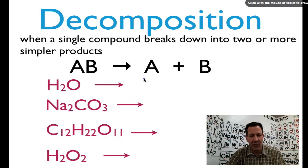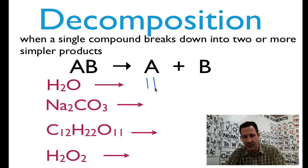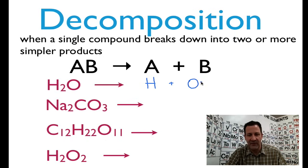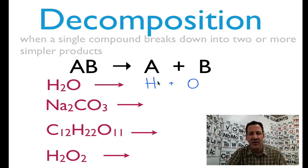So we have water, H2O. We're going to decompose that. That's commonly done by electrolysis. So we know we're going to have hydrogen and oxygen. Those are our two elements. And it's going to be broken down into elements. So we want to know, is it just hydrogen and oxygen like that, HO, or is it something else?